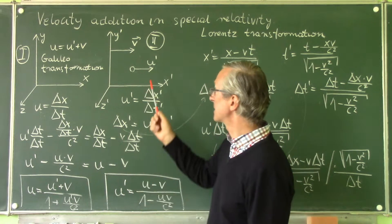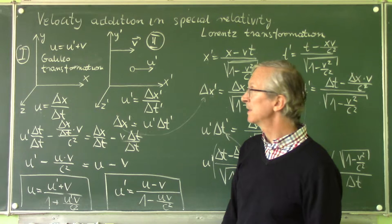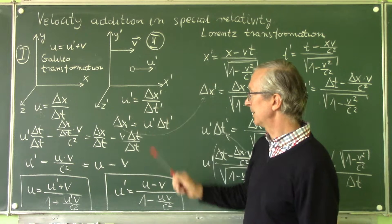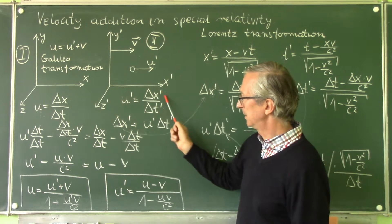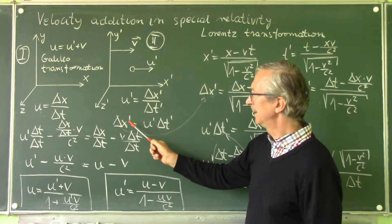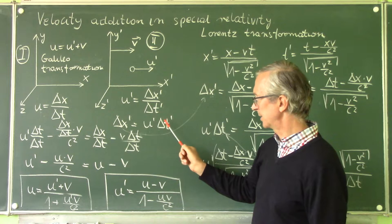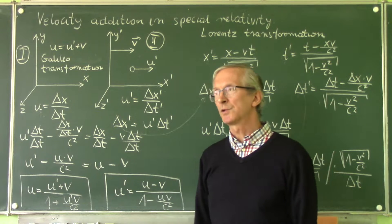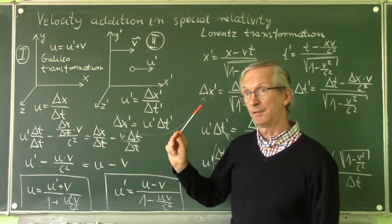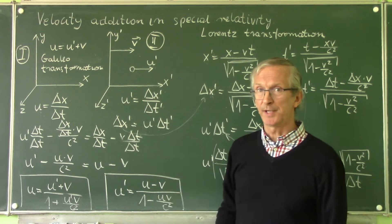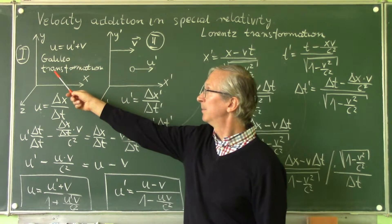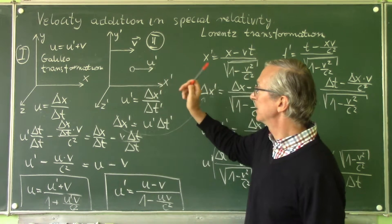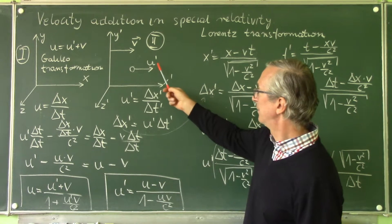We will transform this second equation into such form: delta x dash divided by delta t dash. We want to know what value of the velocity of this object will be measured by the observer in the first frame of reference, if the observer in the second frame of reference measures the value u dash.